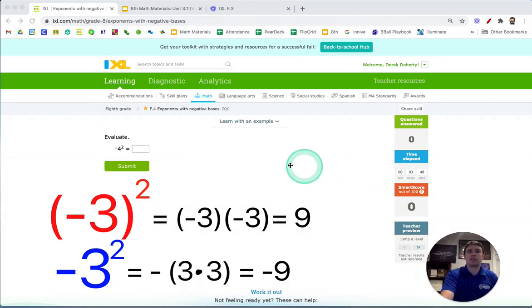Hello, 8th graders. In this IXL video, we're taking a look at assignment F4, which is called exponents with negative bases. So now we're moving forward in our exponent work, and they're going to put some kind of negative symbol involved with the base term. And there is a very important distinction here that we're going to make in the notes about whether or not the negative base term has parentheses around it.